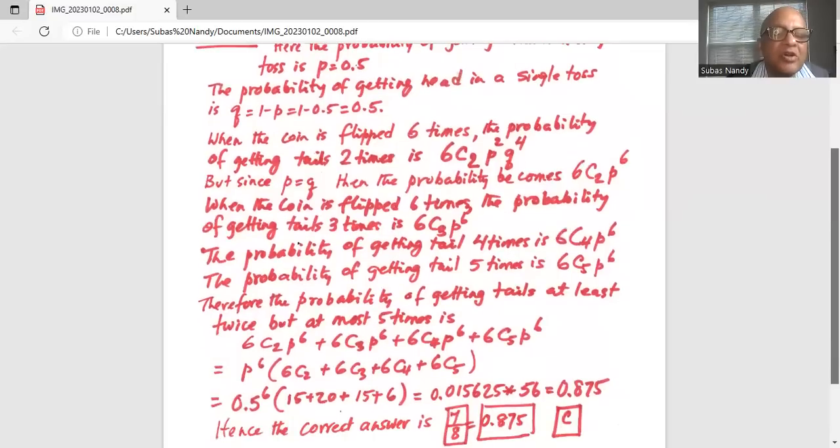P raised to the power of six is 0.5 exponent six. And you can find out 6C2 is 15, 6C3 is 20, 6C4 is 15 and 6C5 is 6. So you add inside the parenthesis 15 plus 20 plus 15 plus 6. Now 0.5 exponent six is 0.015625 multiplied by the sum of the four numbers is 56. The total is 0.15625 times 56 is 0.875.